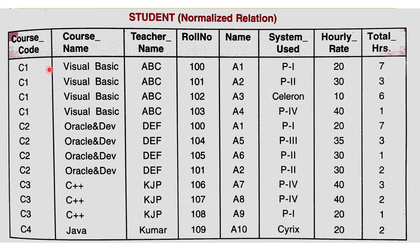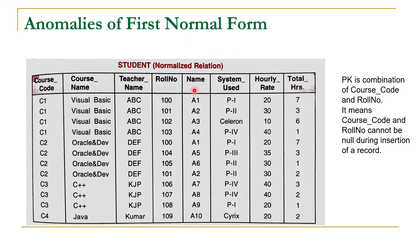Whenever we have a relational table, our first task is to identify the primary key. You can see that course code is repeating, and same way roll number is also repeating. It means that course code individually cannot act as a primary key, and roll number cannot either. The primary key is the combination of course code and roll number. This means we cannot insert null into course code or roll number, and this constraint will pose a lot of problems during insertion of data.